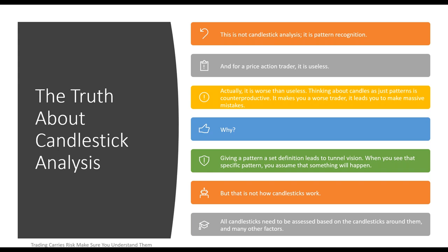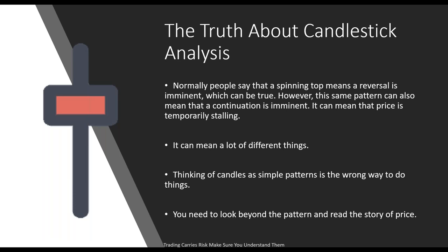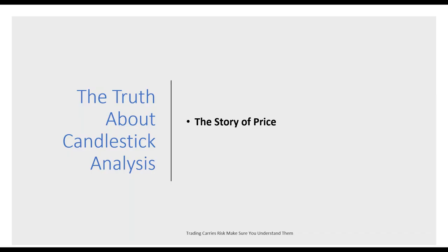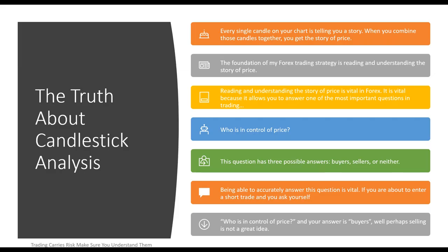All candlesticks need to be assessed based on the candlesticks around them and other factors. For example, a spinning top normally means a reversal is imminent — which can be true. However, the same pattern can also mean a continuation pattern is imminent, or that price is temporarily stalling. It can mean a lot of different things. So thinking of candlesticks as simple patterns is the wrong way. You need to look beyond those patterns and look at the story of price. Every single candle on your chart is telling you a story, and when you combine those candles together, you get the true story of price. The foundation of my strategy is reading and understanding the story of price.